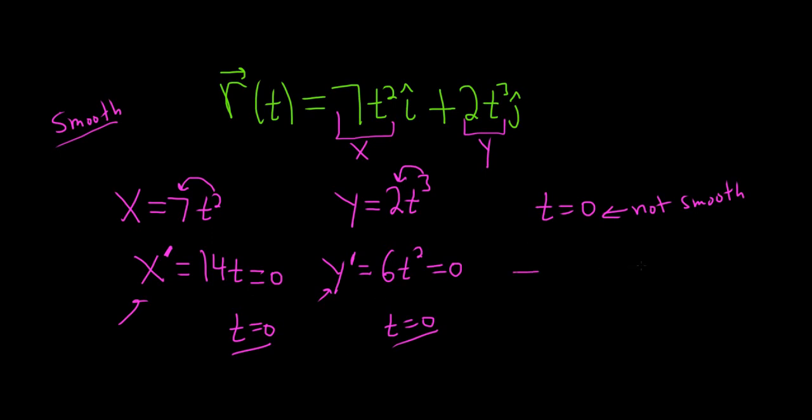So to find out where it's smooth we can just simply draw a number line. And we'll take zero and put it right here. And it's everything over here all the way to zero but you don't include it. Then you start at zero again so use another parenthesis and then all the way this way.